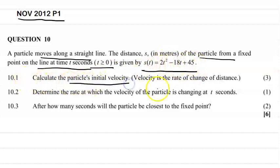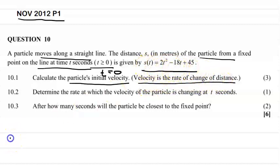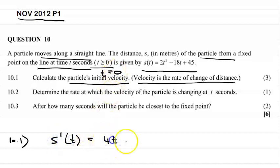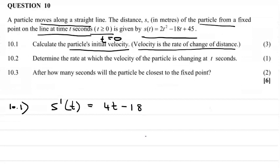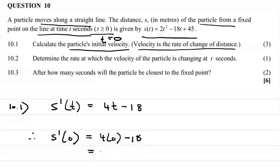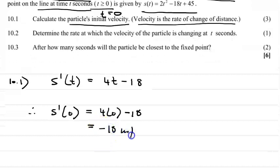Calculate the particle's initial velocity. Velocity is the rate of change of distance, so we need to find the derivative S'(T). For initial velocity, T = 0. The derivative is S'(T) = 4T - 18. Substituting T = 0 gives S'(0) = -18 meters per second.